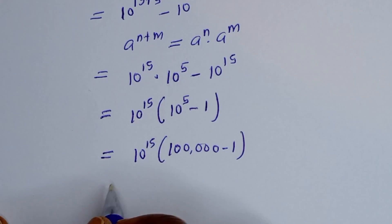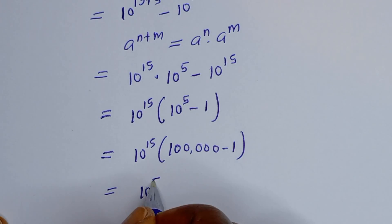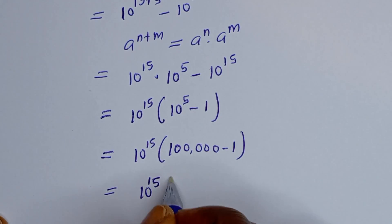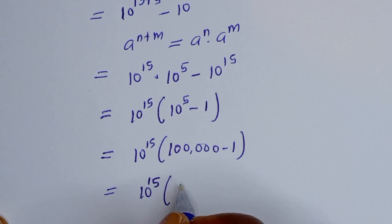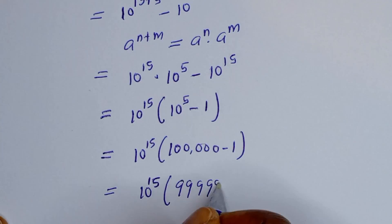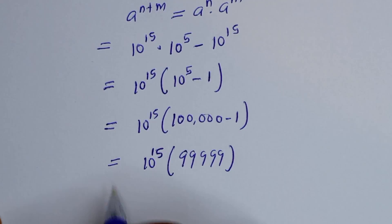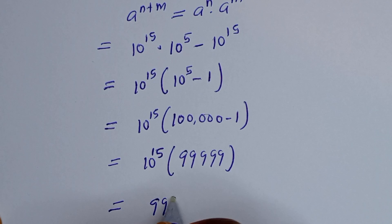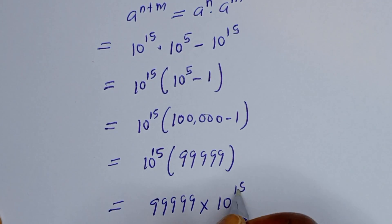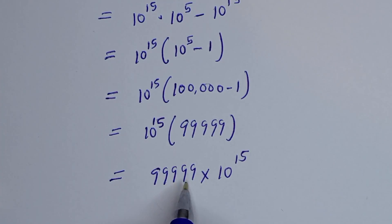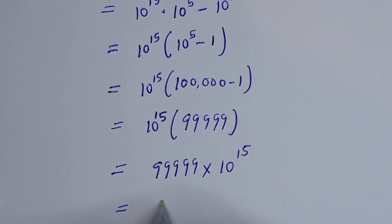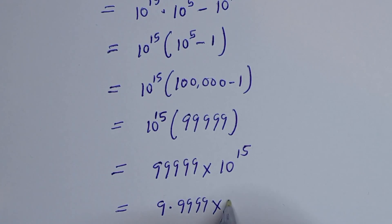So we have 10 raised to power 15, times the bracket 100,000 minus 1, which equals 10 raised to power 15, times 99,999. And 99,999 can be written in standard form as 9.9999 times 10 raised to power 4.